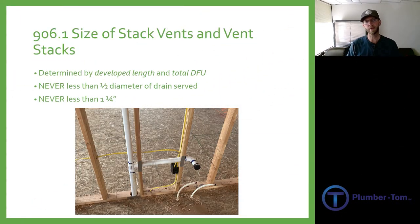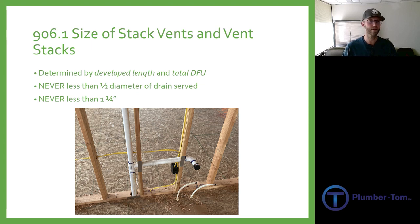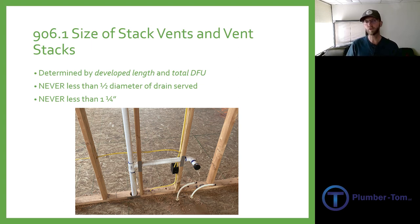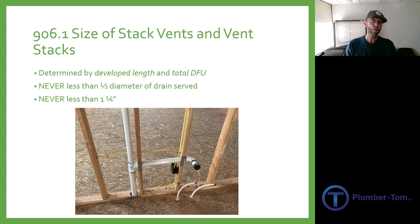Some minimum requirements for the sizing of vents: first, it's never going to be less than half of the diameter of the drain served. So if it's a four inch pipe, the vent should never be smaller than two inches. Three inch pipe should never be smaller than one and a half inch for the vents. But there is also a limit of one and a quarter inch — the vent pipe itself should never be smaller than one and a quarter inch. So if you have a two inch pipe, you might think you could run a one inch vent, but that's not acceptable. One and a quarter is the smallest you would ever run for a vent pipe.